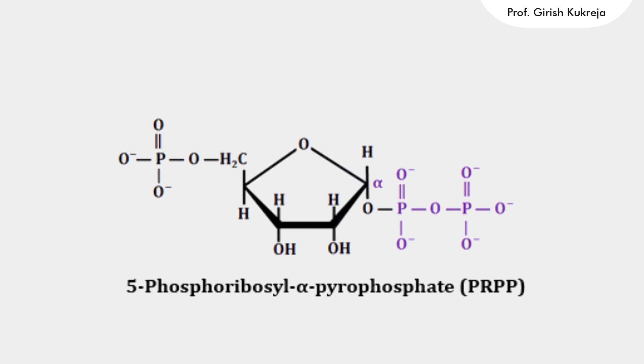The phosphoenolpyruvate and erythrose-4-phosphate family, and the ribose-5-phosphate family. Apart from these, another precursor or intermediate which forms the precursor for amino acid biosynthesis and also nucleotide biosynthesis is PRPP, that is 5-phosphoribosyl-1-pyrophosphate.